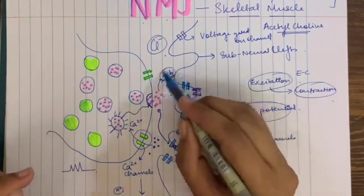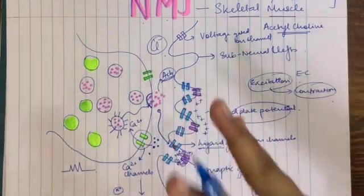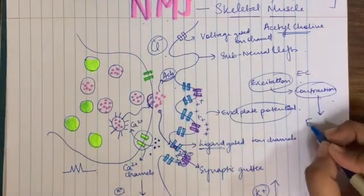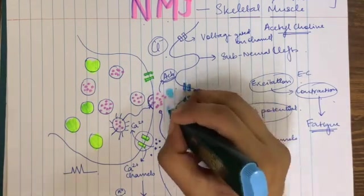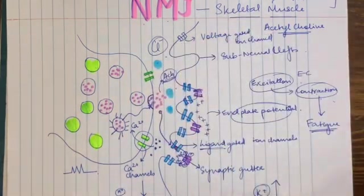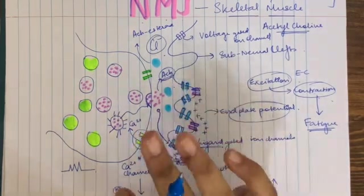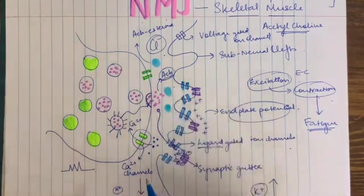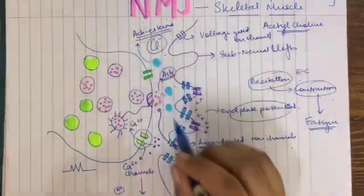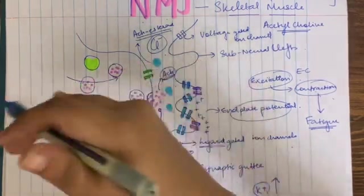Since all this process is done, something has to be done about this acetylcholine — because if it persists in this area, it will cause the muscle to excite again and again, and when it excites again and again it contracts again and again, leading to muscle fatigue. To overcome this, we have another set of enzymes known as acetylcholinesterase. These destroy the acetylcholine neurotransmitters. As soon as their job is done — that is, binding to the ligand-gated ion channel — the acetylcholine neurotransmitters are destroyed by acetylcholinesterase, hence preventing muscle fatigue.